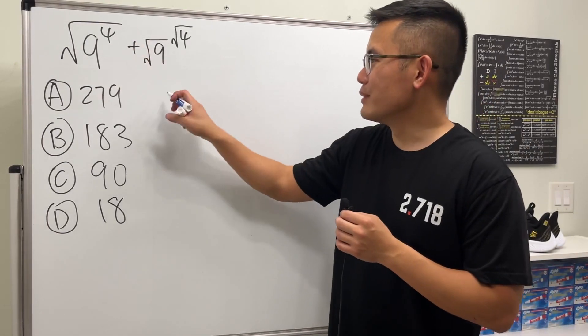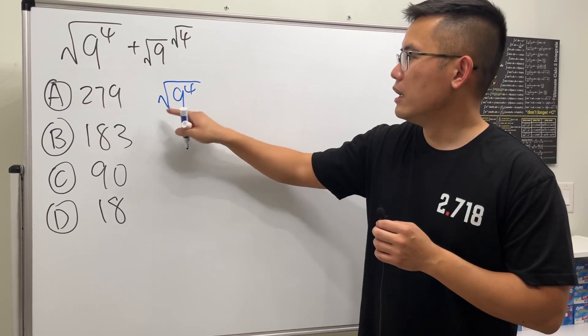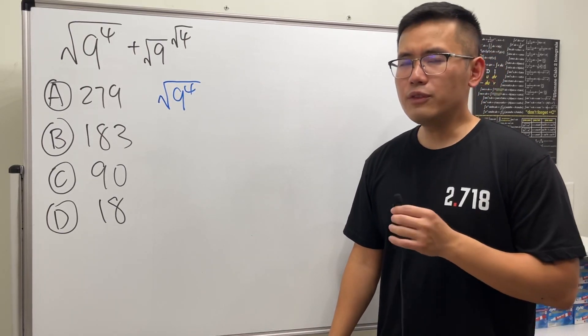Let's go ahead and do it. I just want to point out a very common mistake. When people see square root of 9 to the 4th power, you have to be really careful.